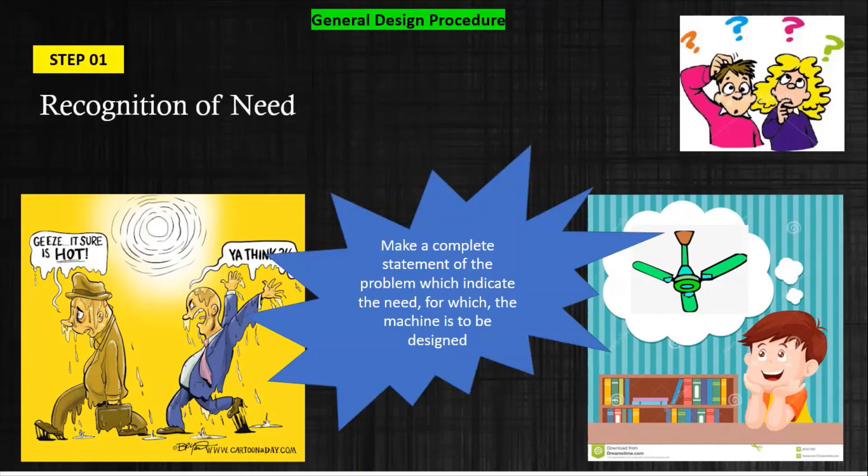If you see this statement, make a complete statement of the problem which indicates the need for which the machine is to be designed. We decided that we have to manufacture a ceiling fan because we have to solve problems, but we should write a complete statement. For example: Design a ceiling fan for a bedroom having a size 10 feet by 12 feet, that is equal to 120 square feet. Now it is very clear that I have to design this fan for my bedroom.